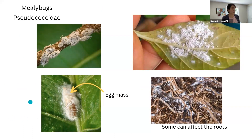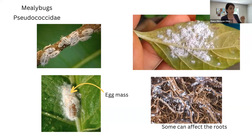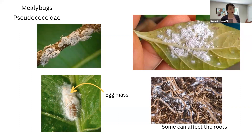Mealybugs don't have a hard wax, but they have a soft wax usually in threads, as you can see here. This is an adult female with egg masses underneath. They are again pretty cryptic-looking — if you see white material on your plant, it can look like a fungus. Pay attention and try to remove some of the wax to get a better idea of what you actually have. Some mealybugs can affect the roots, so if you see a plant just wilting for unknown reasons, check the roots because you might have mealybugs.